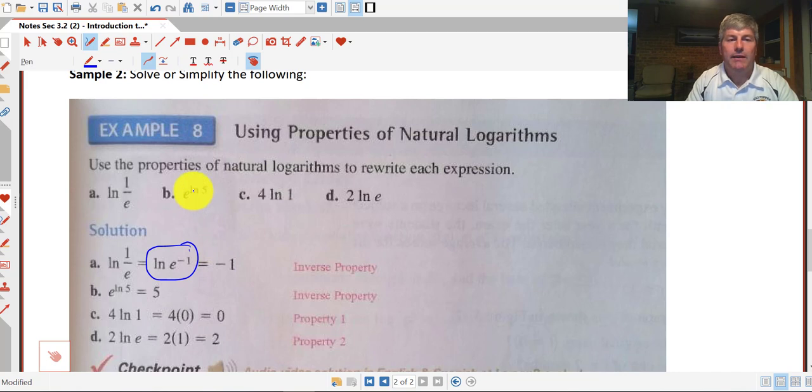In b, e raised to the natural log of 5 is 5. Again, that inverse property that we saw a moment ago. In c, 4 times the natural log of 1, well, the natural log of 1 is 0, so this is simply 4 times 0, which is 0. And then 2 times the natural log of e, the natural log of e is 1, so this is simply 2 times 1, which is 2.